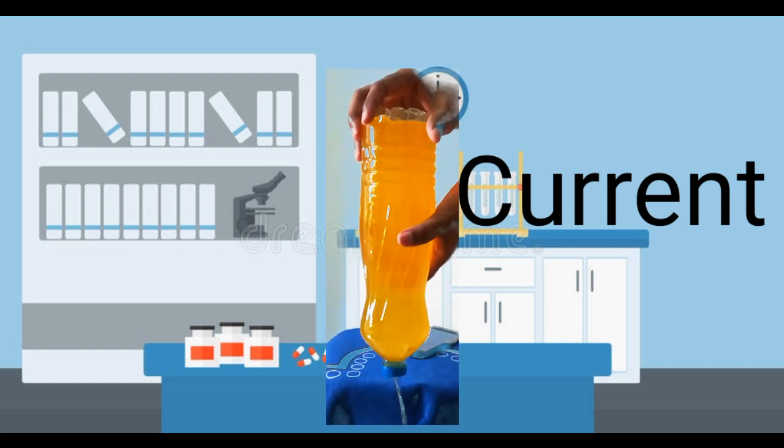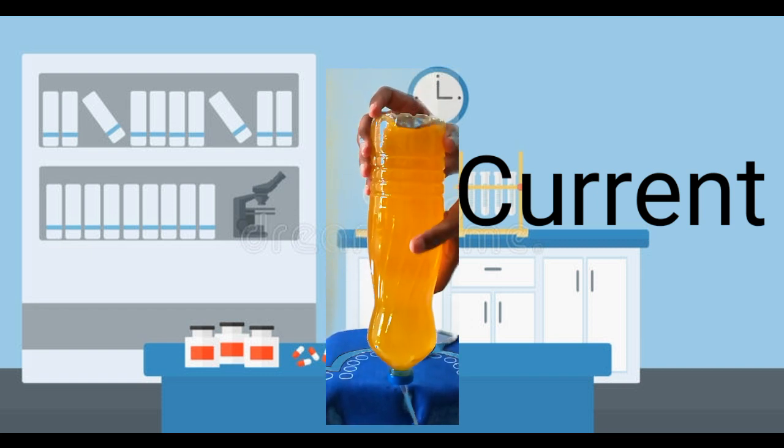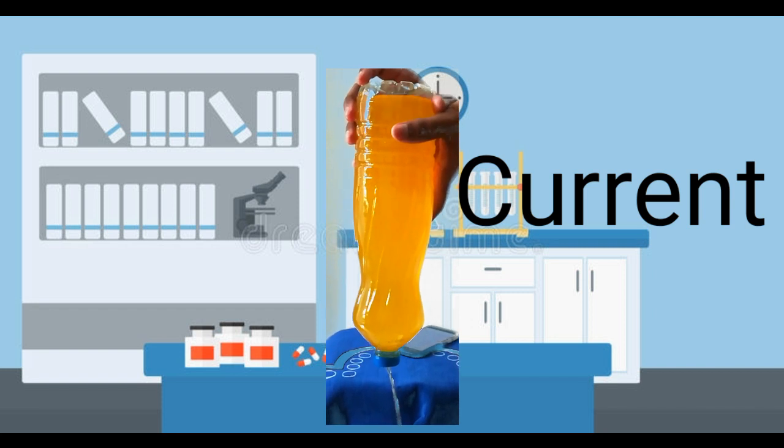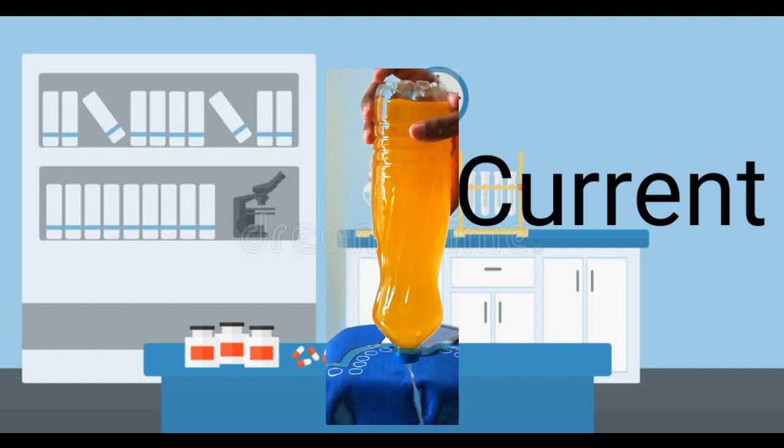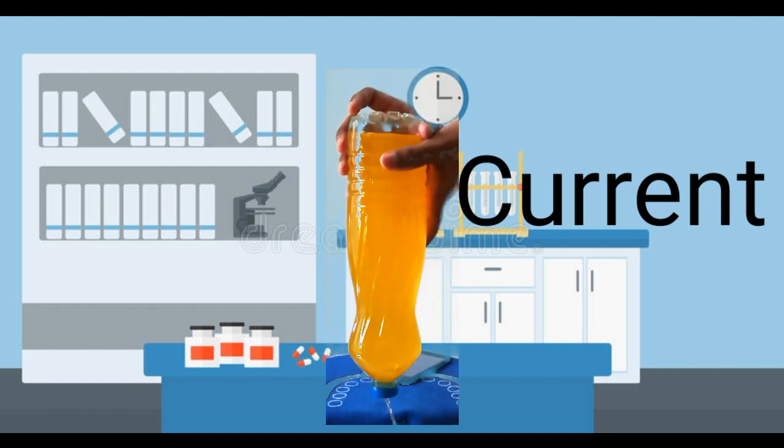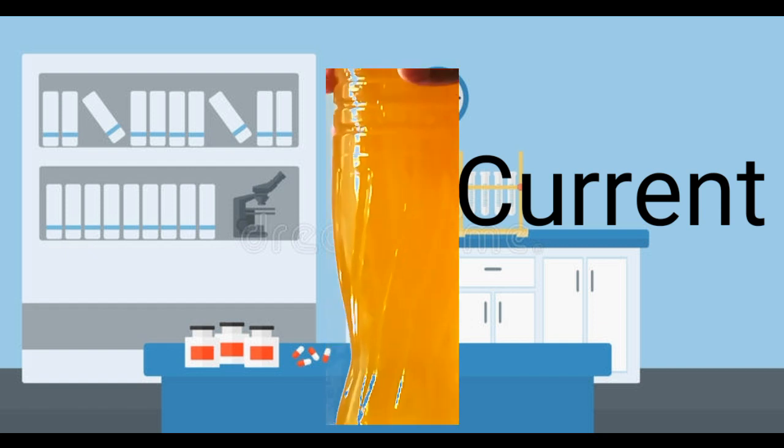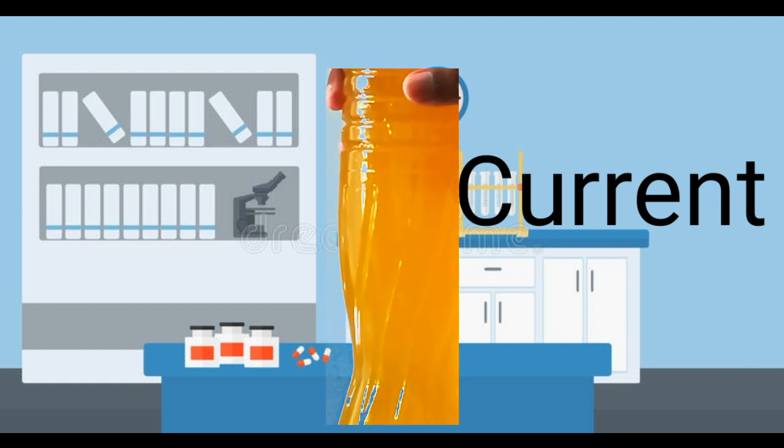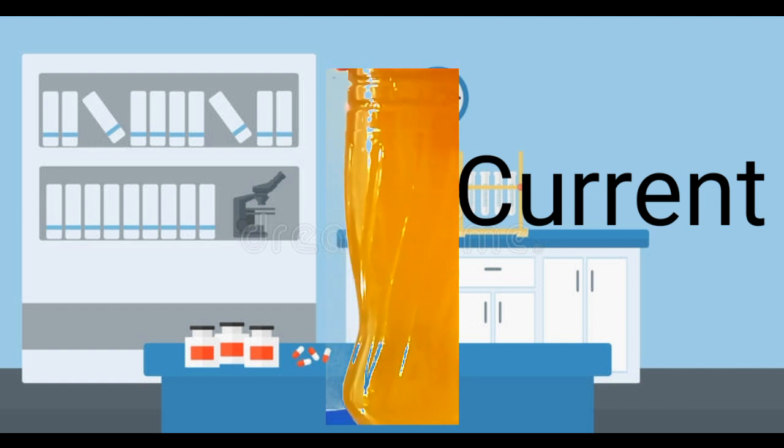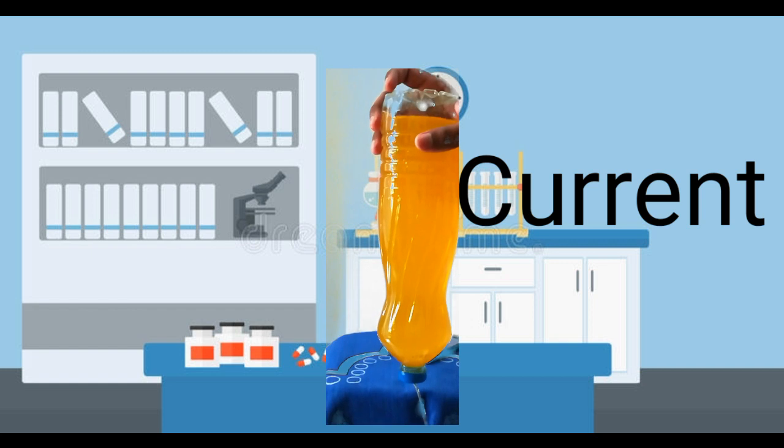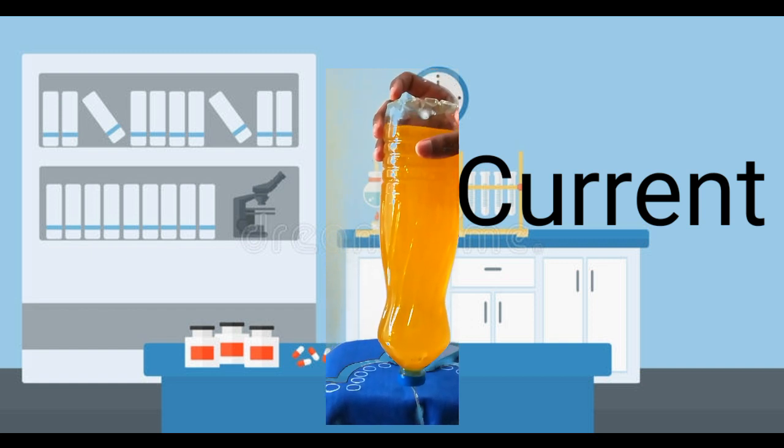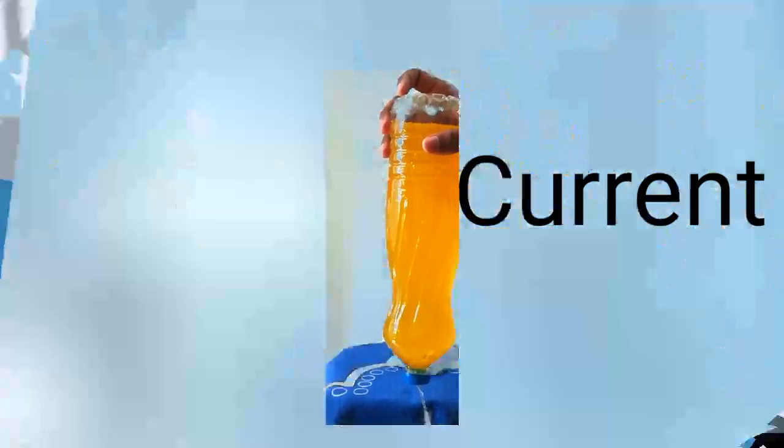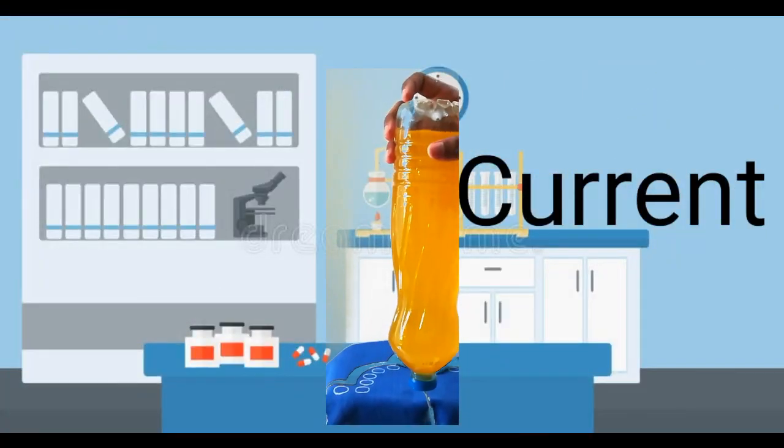The next is current. Current normally is the flow of electrons. Here I can say, see this water drain from the bottle. How much time it takes for this water to completely drain from this bottle - that total time is current. Suppose this water takes 10 minutes to completely drain from the bottle, the 10 minutes is the current.